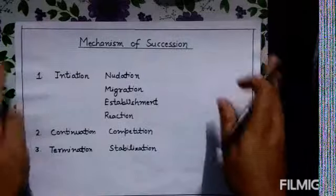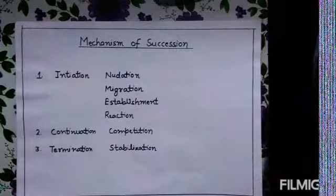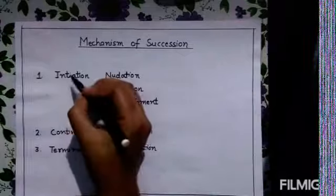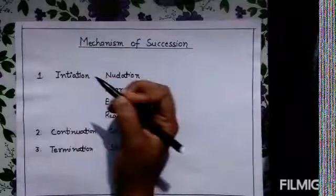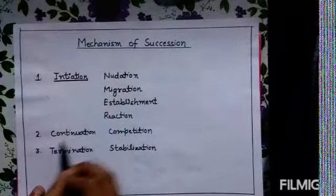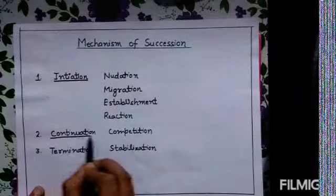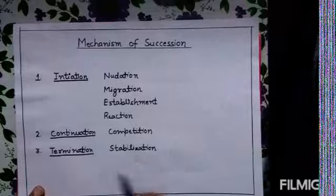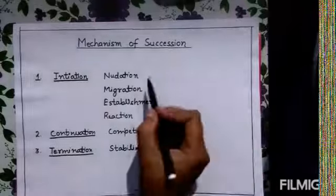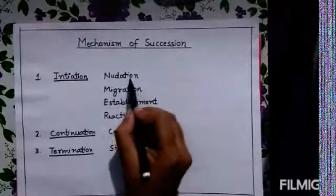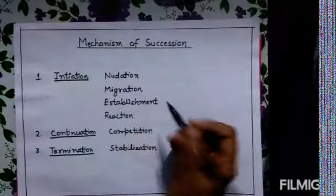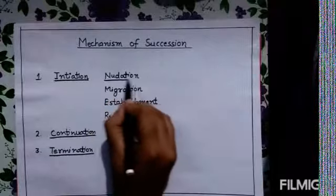To understand the process of succession, we have defined the process into several steps: first, initiation of succession; second, continuation of succession; and third, termination of succession. Several subcategories are also present — nudation, migration, establishment, and reaction — and we will take them one by one.